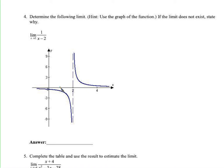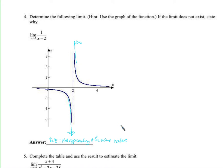Find the limit as x approaches 2 of 1 over (x minus 2). We have a graph. As we approach 2 from the left, it just keeps going down to negative infinity. But from the right, we go up to positive infinity. So the limit does not exist. The reason is that it's not approaching the same value from the left and the right — it's not approaching any single value.